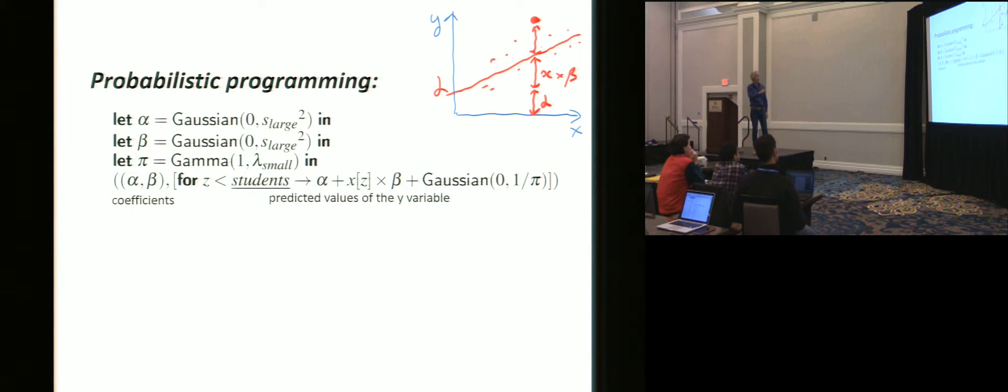This is in an ML-like language, but people use other syntaxes. What this is saying is, first of all, we choose alpha, the intercept, from a Gaussian distribution. This is a very wide Gaussian distribution. The statisticians call this an uninformative prior. It's got a small chance of being almost any real number, positive or negative. Beta, similarly, has a very wide distribution. And then we also choose pi, which is the precision of the noise. A small precision means there is a lot of noise. A high precision means there's very little noise.